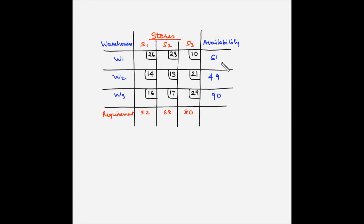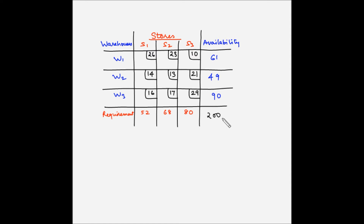Adding the supply: 61 plus 49 is 110, and 110 plus 90 is 200. The total demand is 52 plus 68 plus 80, which is also 200. Both supply and demand are equal to 200, so this is a balanced transportation table.